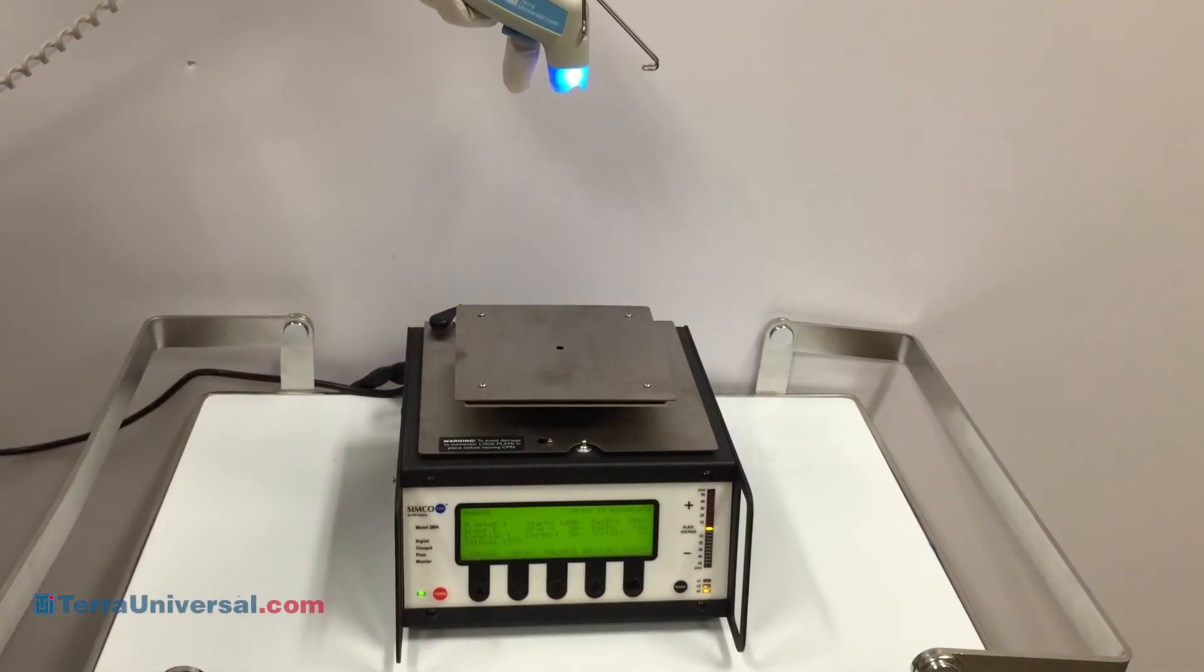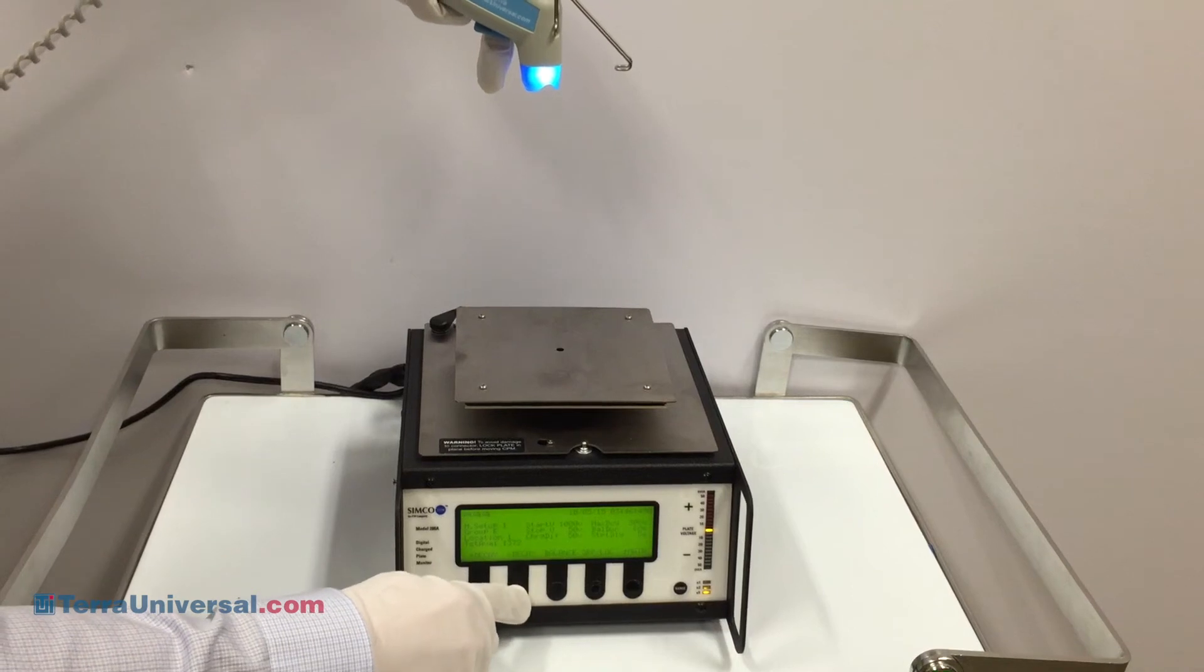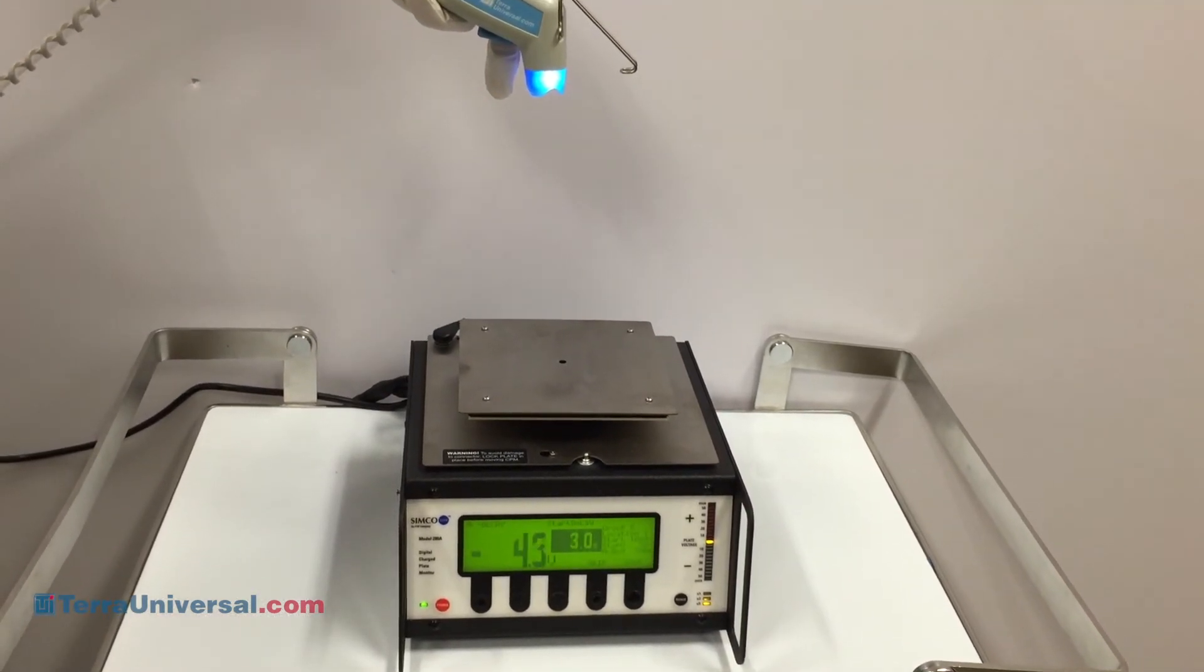Next, we will look at the decay rate for a negative charge. Once again, the surface is charged to 1,000 volts, and the timer started.